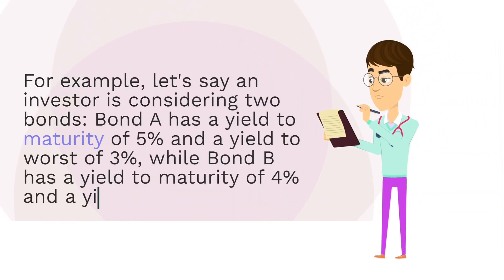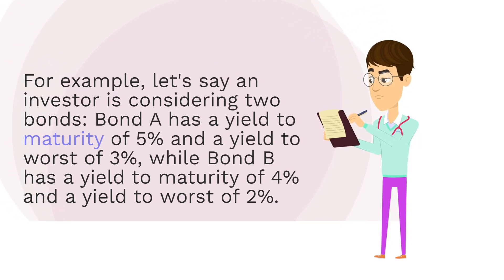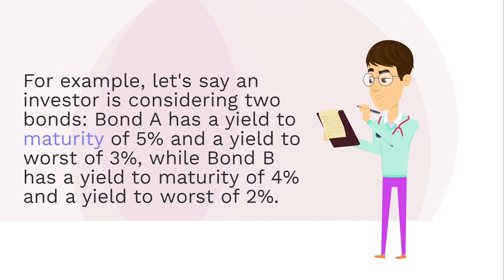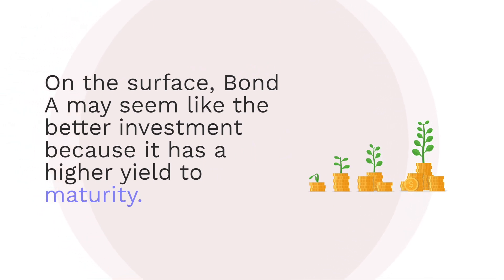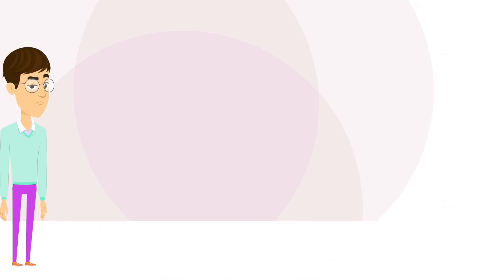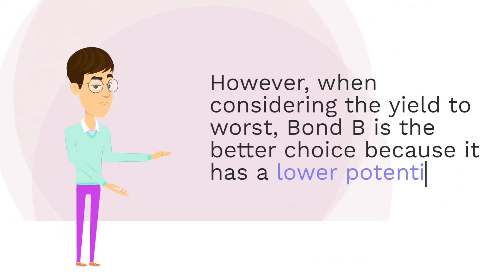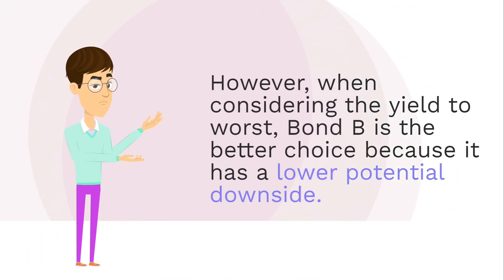For example, let's say an investor is considering two bonds. Bond A has a yield to maturity of 5% and a yield to worst of 3%, while Bond B has a yield to maturity of 4% and a yield to worst of 2%. On the surface, Bond A may seem like the better investment because it has a higher yield to maturity. However, when considering the yield to worst, Bond B is the better choice because it has a lower potential downside.